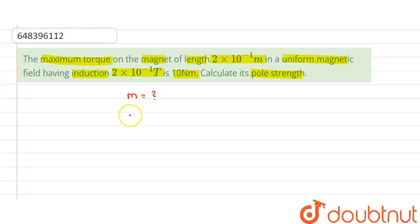It is given that the length of the magnet L is equal to 2 × 10⁻¹ meter. Magnetic field induction B is given equal to 2 × 10⁻¹ tesla. And torque τ is equal to 10 newton meter. This is the maximum torque.